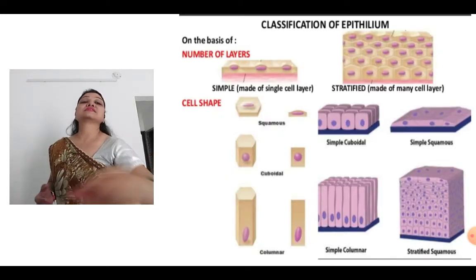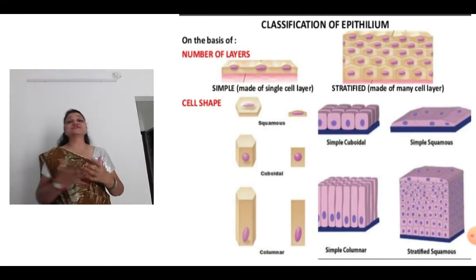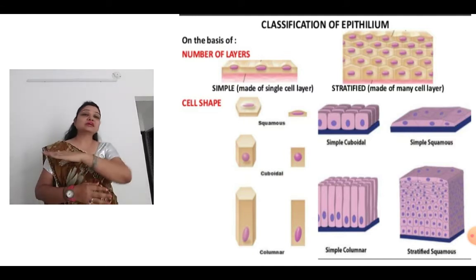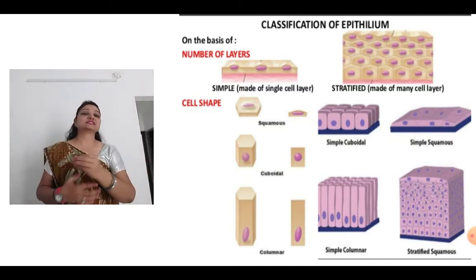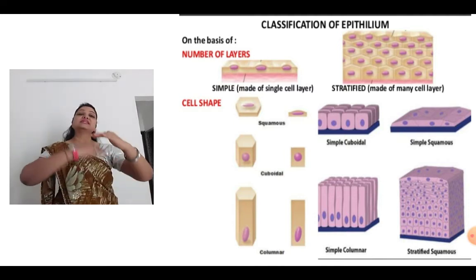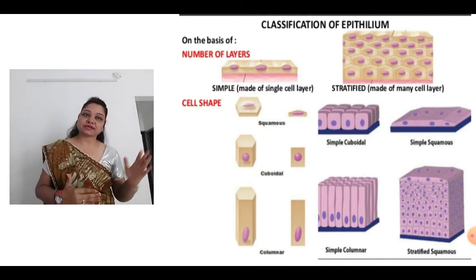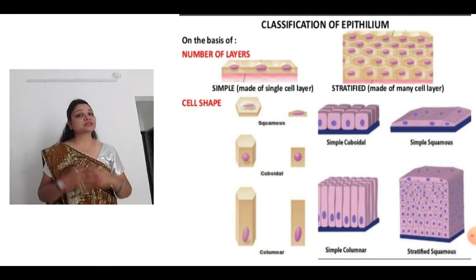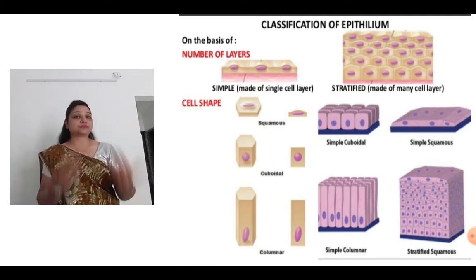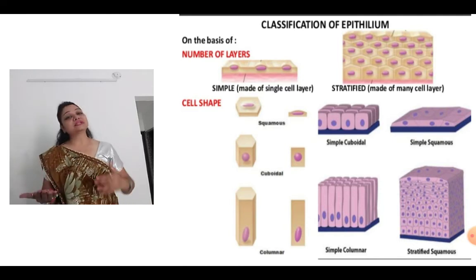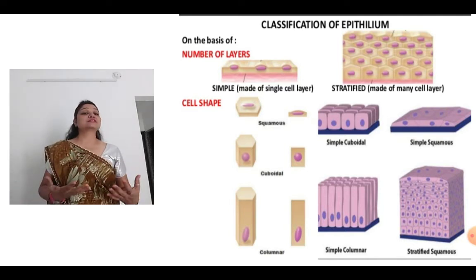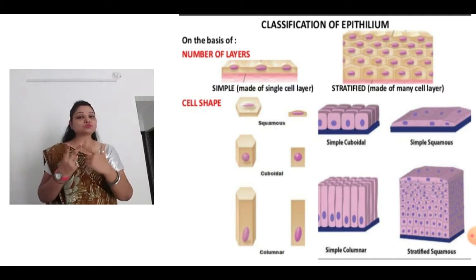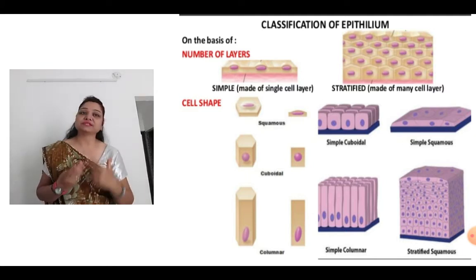Now the subtypes — the classification of epithelium on the basis of number of layers. When a single layer is present it is simple, and when many layers are there it is stratified. On the basis of cell shape it will be squamous, cuboidal and columnar.